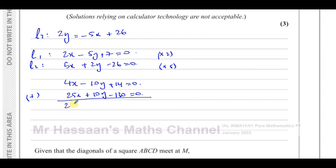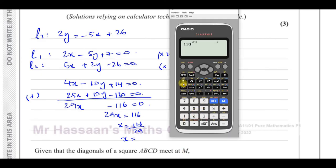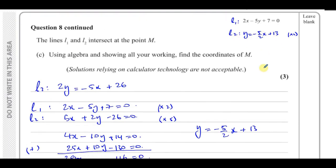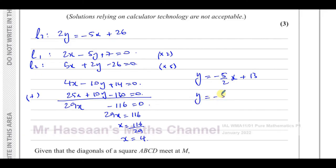So 29x equals 116, which gives x equals 116 over 29, which equals 4. Now substituting x equals 4 into the equation of line 2: y equals minus 5 over 2 times 4 plus 13. That's minus 10 plus 13, which equals 3. So y equals 3, and the coordinates of M are (4, 3).